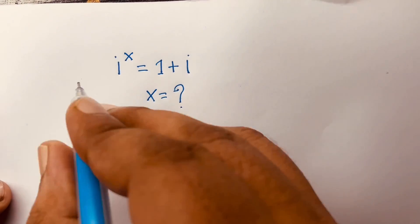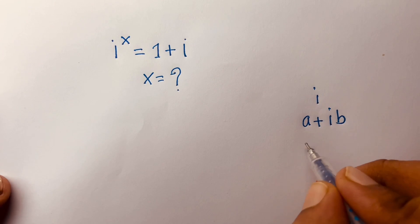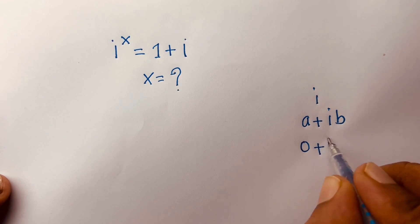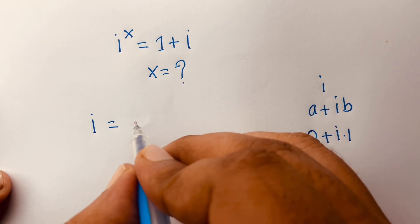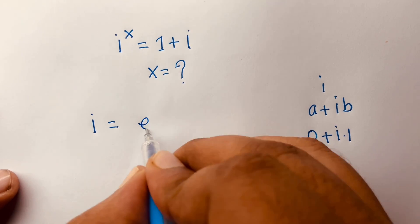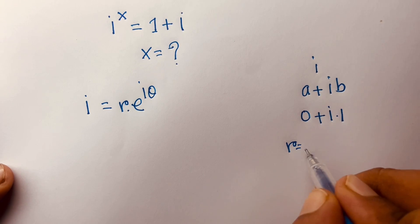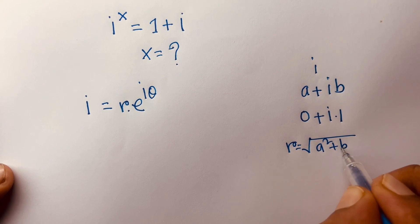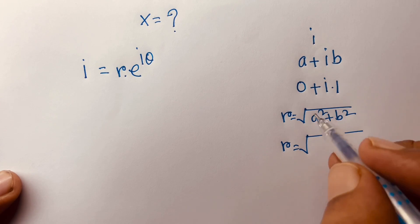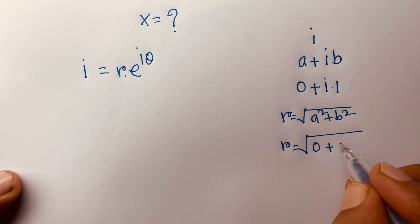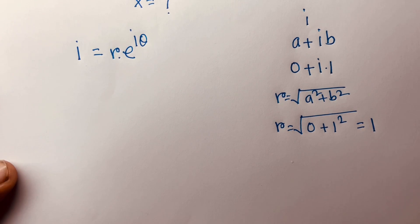First of all, i to the power x. We know that i can be written as a + ib. According to this, a is equal to 0 and b is equal to 1. So we can write i in polar form as r·e^(iθ), where r is equal to square root of a squared plus b squared. So r equals square root of 0 plus 1 squared, which gives r equal to 1.